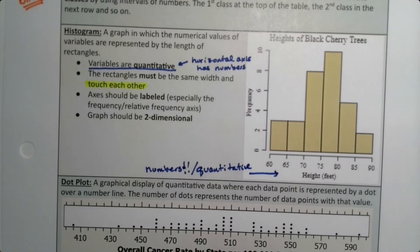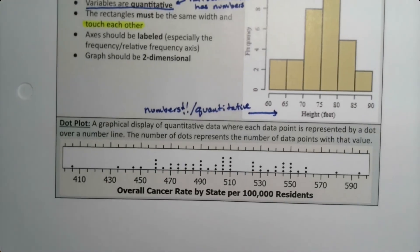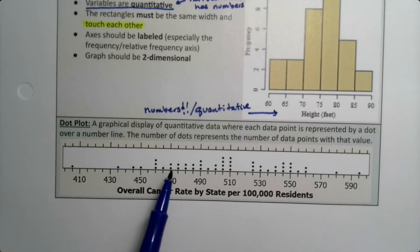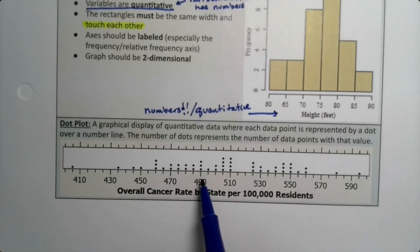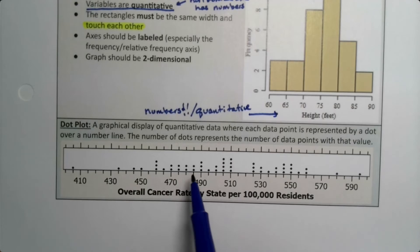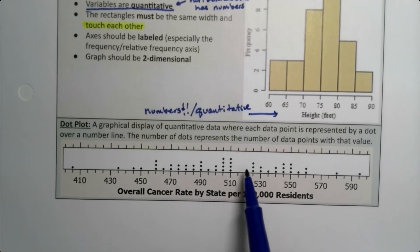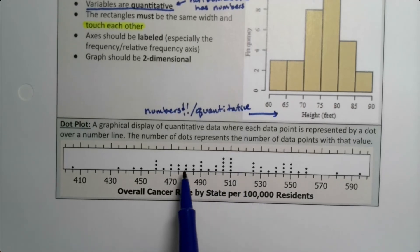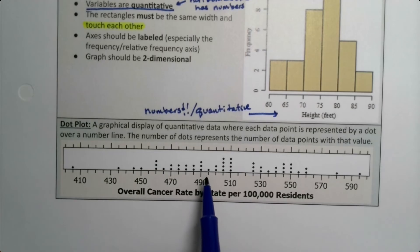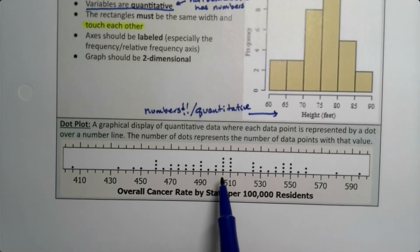We're also going to learn how to make a dot plot, which is a lot like a histogram but uses dots instead — each dot represents one of the values. For example, we have three states at 494, four states at 510, and only one state at about 495. That's how a dot plot works.